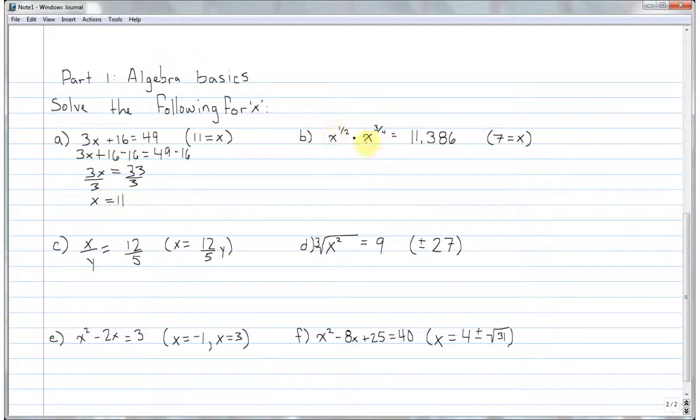Over here. Since these two like-based terms are multiplied together, we can add the exponents. So I have 1 over 2 plus 3 over 4 is equal to 5 over 4. So that's going to be my new exponent. So now x to the 5 over 4 equals 11.386. I'm going to take both sides to the exponent 4 over 5. And since I have an exponent taken to an exponent, I can multiply these two together. I'll get 20 over 20 or just 1. So I'll be left with x equals 7.